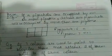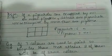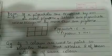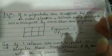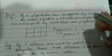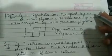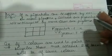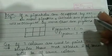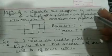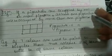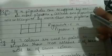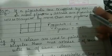The formal statement: if n pigeon holes are occupied by n plus one or more pigeons, then at least one pigeon hole will be occupied by more than one pigeon. In the previous example we had two pigeon holes, so n equals two, and the pigeons were n plus one, which is three.